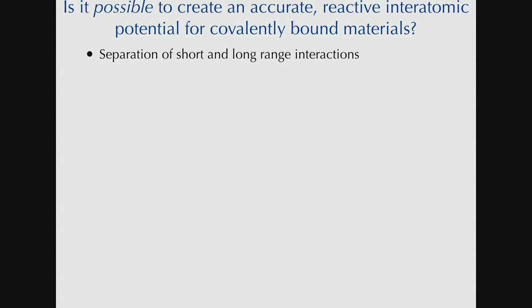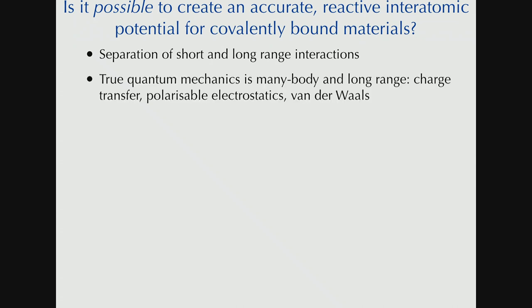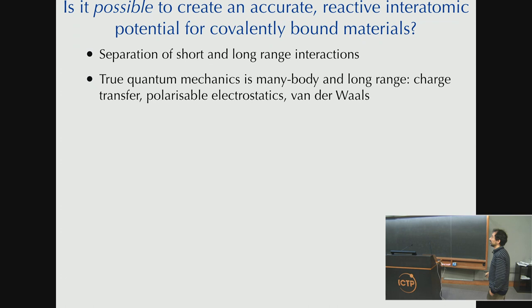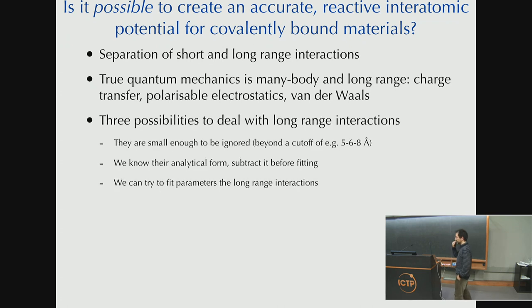And the rest of the talk will really focus on the short-range interactions. So I do have to say something about long-range interactions because quantum mechanics is long-range, right? So when you solve the Schrodinger equation in whatever approximation, you do have charge transfer. You have polarizable electrostatics and Van der Waals interactions, and they make atoms far away from each other interact.